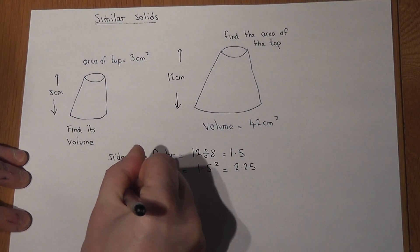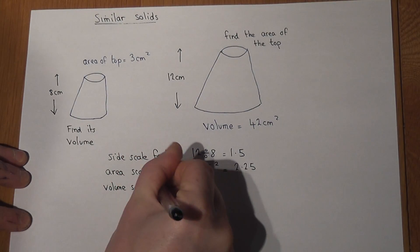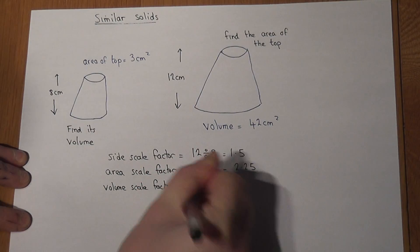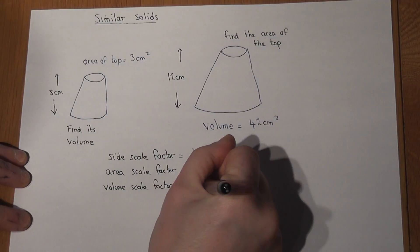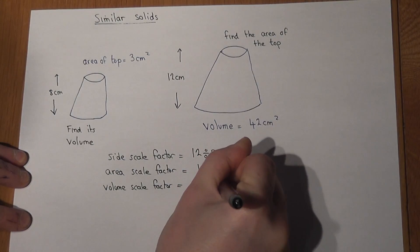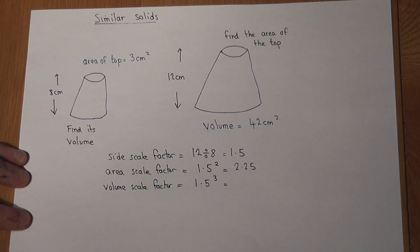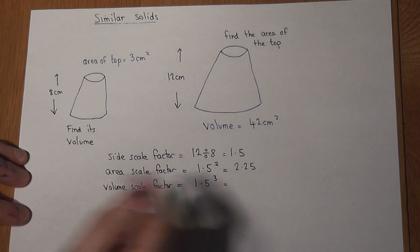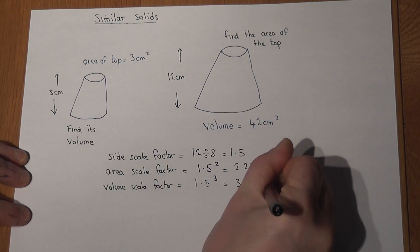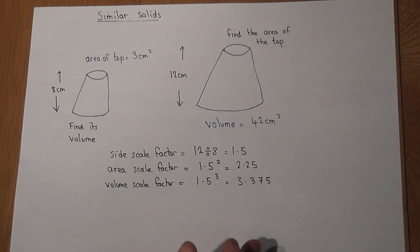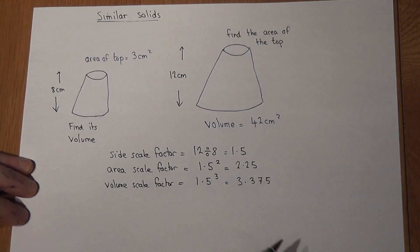To find the volume scale factor, I don't square the side scale factor, I cube it. 1.5 cubed works out to 3.375. So what does this mean? Well, in simplistic terms, these are the scale factors.